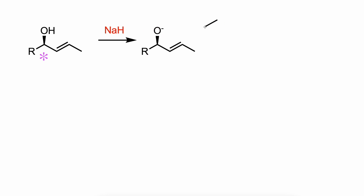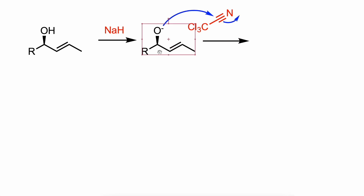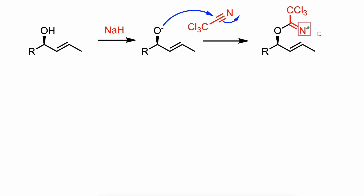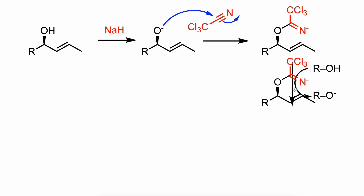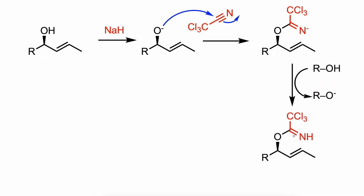The alcohol is first deprotonated by the base. The deprotonated alcohol adds to trichloroacetonitrile to give a trichloroacetimidate anion. The anion abstracts a proton from the alcohol. As this latter intermediate can readily deprotonate the starting alcohol, only a catalytic amount of a strong base is needed.